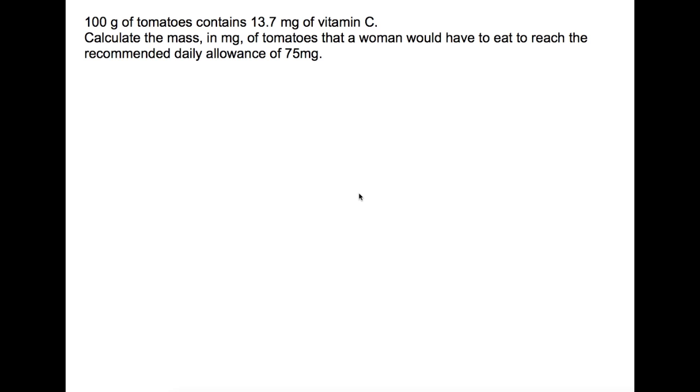So for these questions it's often useful to find some sort of correlation between numbers and do this using a proportion method. So the correlation that we have is that 100 grams of tomatoes will give you 13.7 milligrams of vitamin C.